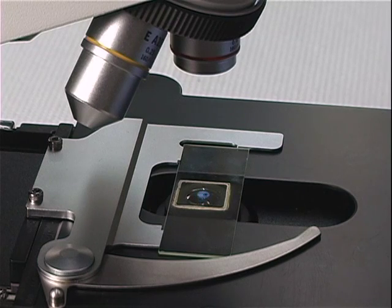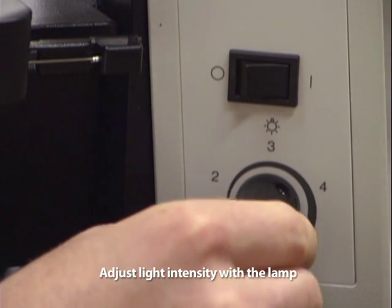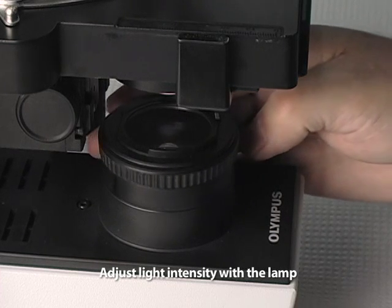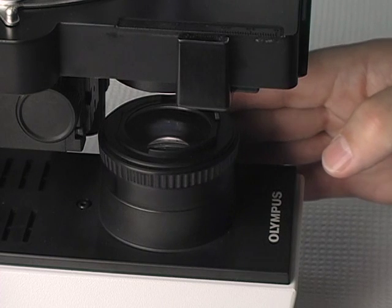The iris diaphragm of the condenser should not be used to adjust the light intensity. Light intensity should be adjusted by decreasing the voltage to the lamp or adjusting an iris diaphragm on the lamp. Generally, with higher magnifications, you will have to increase the light intensity.